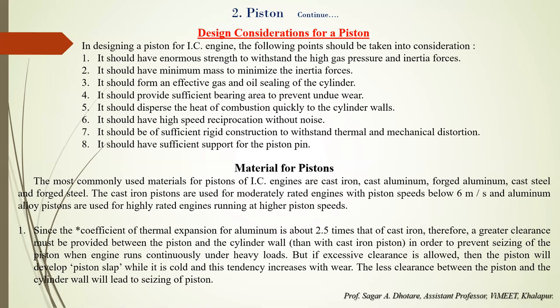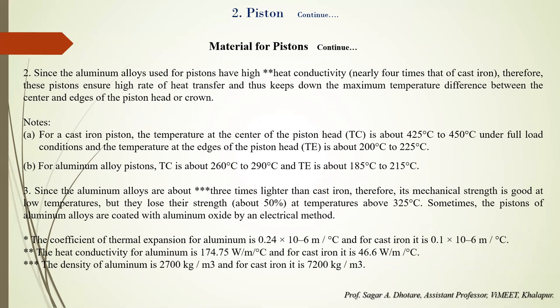Alloy cast steel pistons are used for some automotive engines, while forged steel pistons are used in aircraft engines. The thermal conductivity and density values of aluminum are favorable, which is why forged aluminum pistons are normally preferred nowadays.